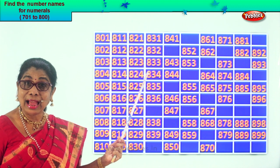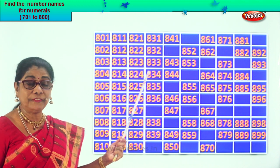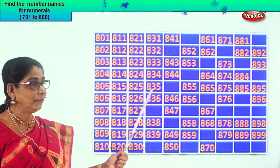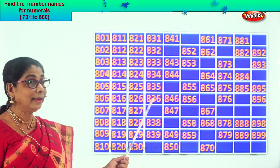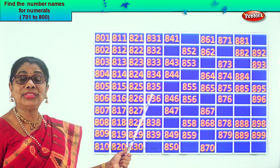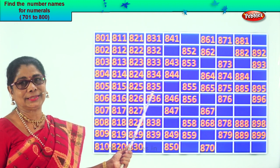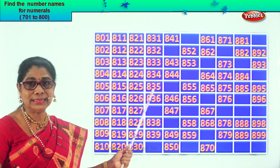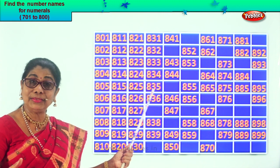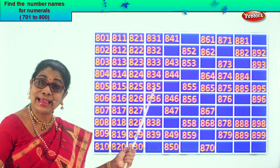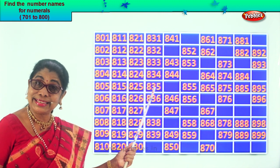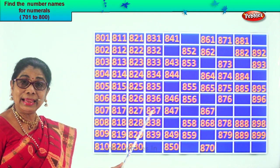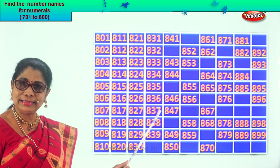Then 834, 835, 836. After 6 comes 7 — after 36 comes 37. So the missing number here is 837.